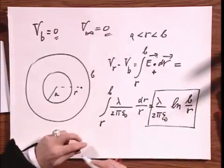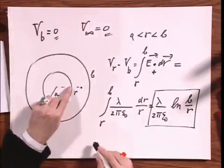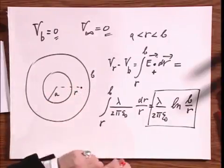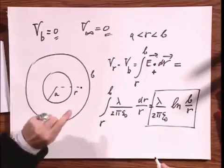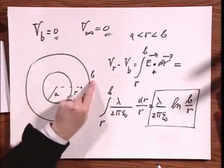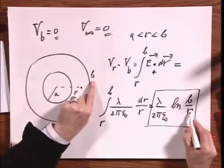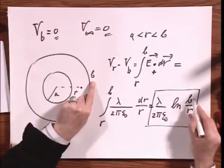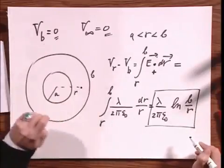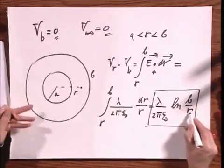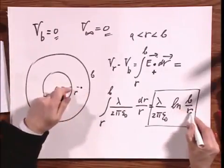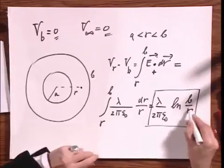Now this integral is the logarithm of R taken between the value B and R. So this becomes lambda over 2 pi epsilon zero times the logarithm of B minus the logarithm of R, which is the logarithm of B over R. So that's the way that the potential changes from here to here. And if you want to know what it is at R equals B, well, you put in R equals B, and what do you find? No surprise. The logarithm of one is zero. It's exactly what we had. If you want to know what the potential is at R equals A, then you put in R equals A, and you find here B over A.